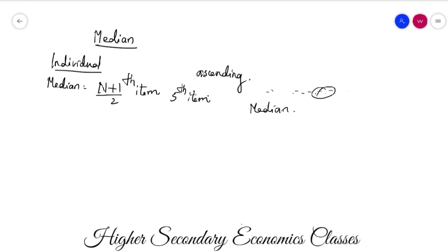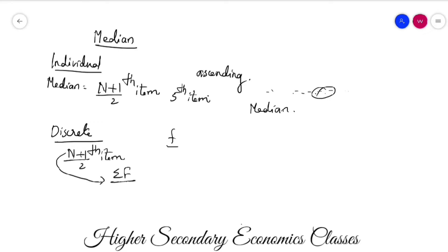That's how the median works for individual series. For discrete series, the equation is the same — (N+1)/2 th item — but here n equals sigma f. We find the cumulative frequency, and the value corresponding to the (N+1)/2 position in the cumulative frequency gives the median x value.